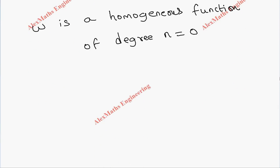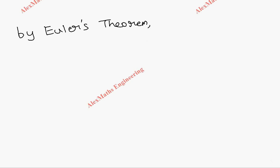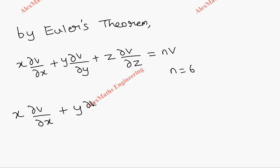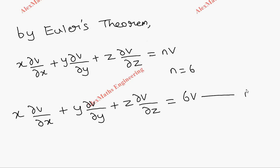Now we are going to use Euler's theorem. Applying Euler's theorem for function v, we get: x·∂v/∂x + y·∂v/∂y + z·∂v/∂z = n·v. Substituting n = 6, we get x·∂v/∂x + y·∂v/∂y + z·∂v/∂z = 6v. Let's call this the first expression.